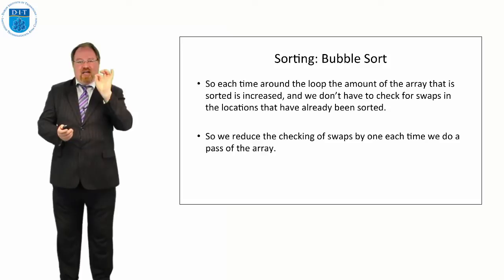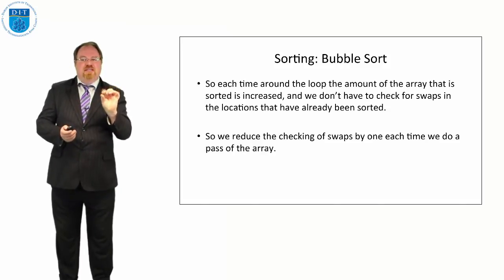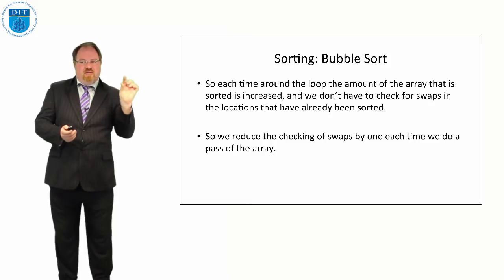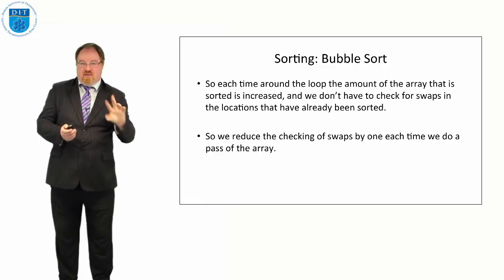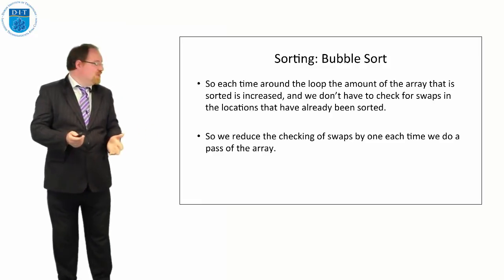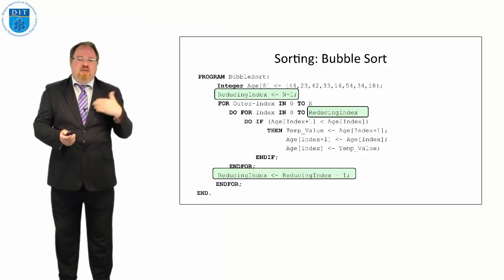So if in some way we could change the inner loop instead of going from 0 to n-1, if we could reduce it to first n-1, then n-2, n-3, n-4, that would save us a load of unnecessary comparisons. So here's how we do it.